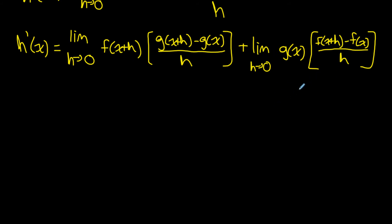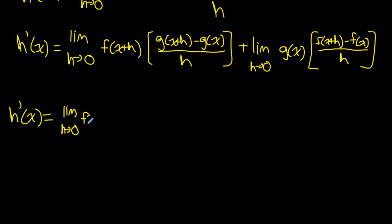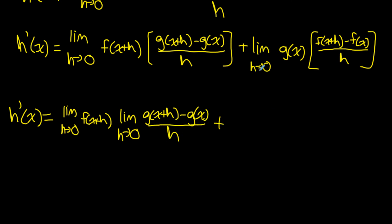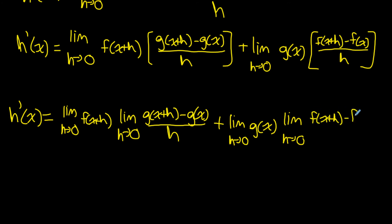Keep in mind that the limit of a product of two things equals the product of their limits. So for the first part, I can find the limit as h goes to zero of f(x+h), multiplied by the limit as h goes to zero of [g(x+h) minus g(x)] over h. Similarly for the second part: the limit as h goes to zero of g(x), multiplied by the limit as h goes to zero of [f(x+h) minus f(x)] over h.